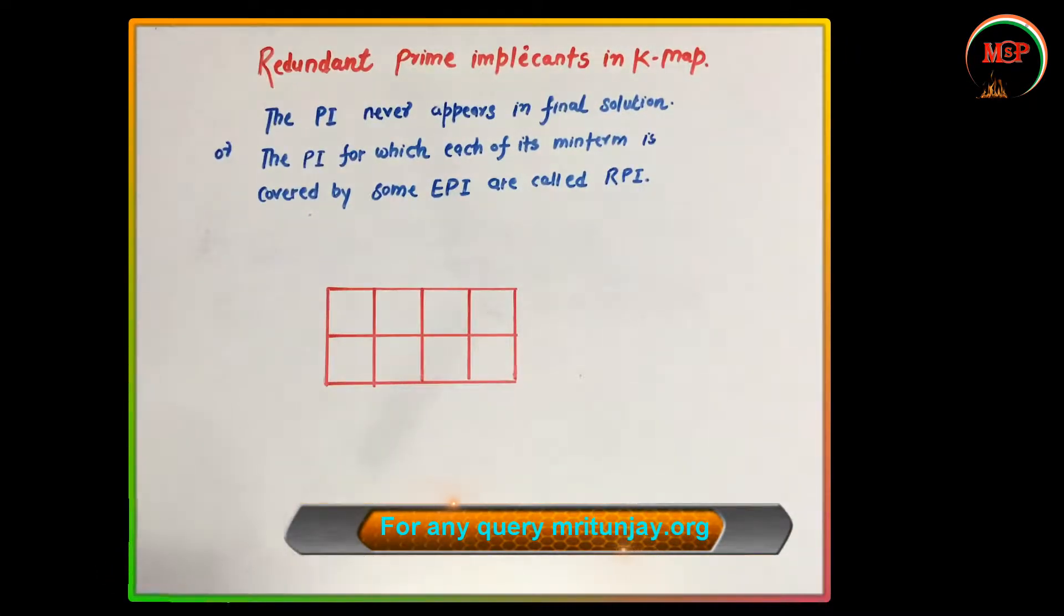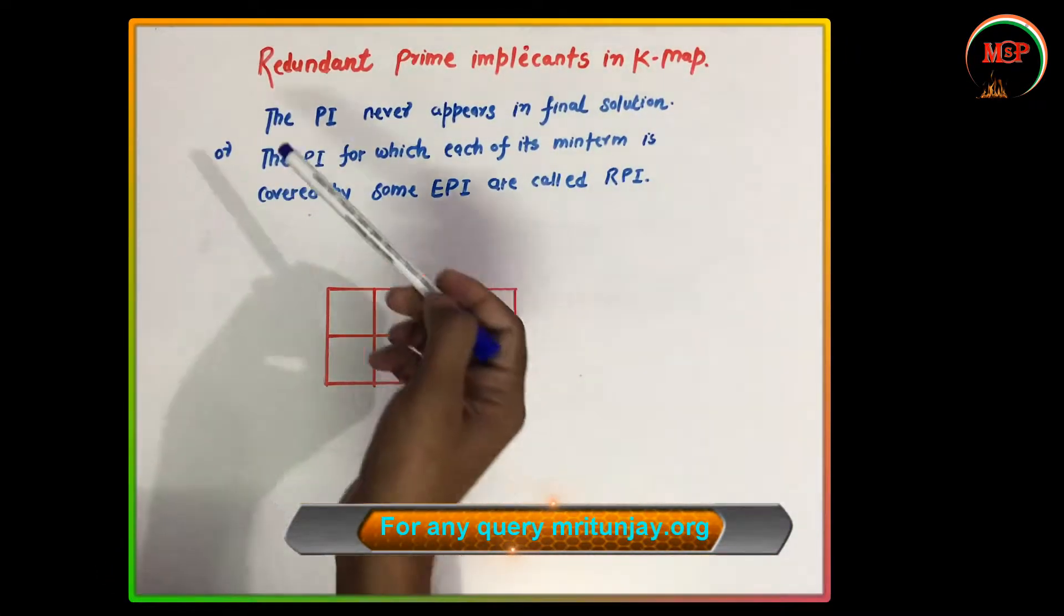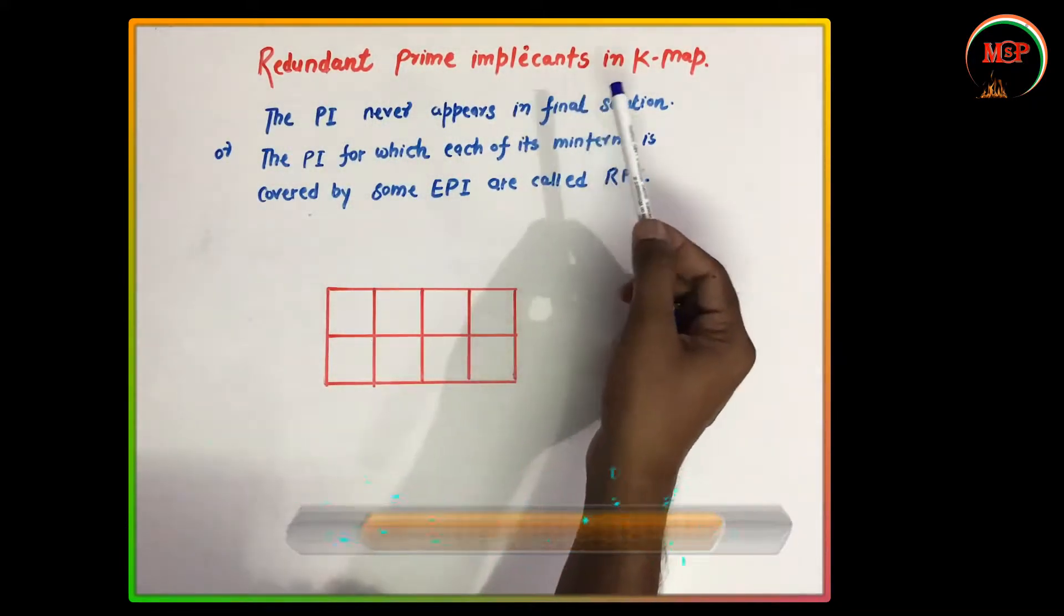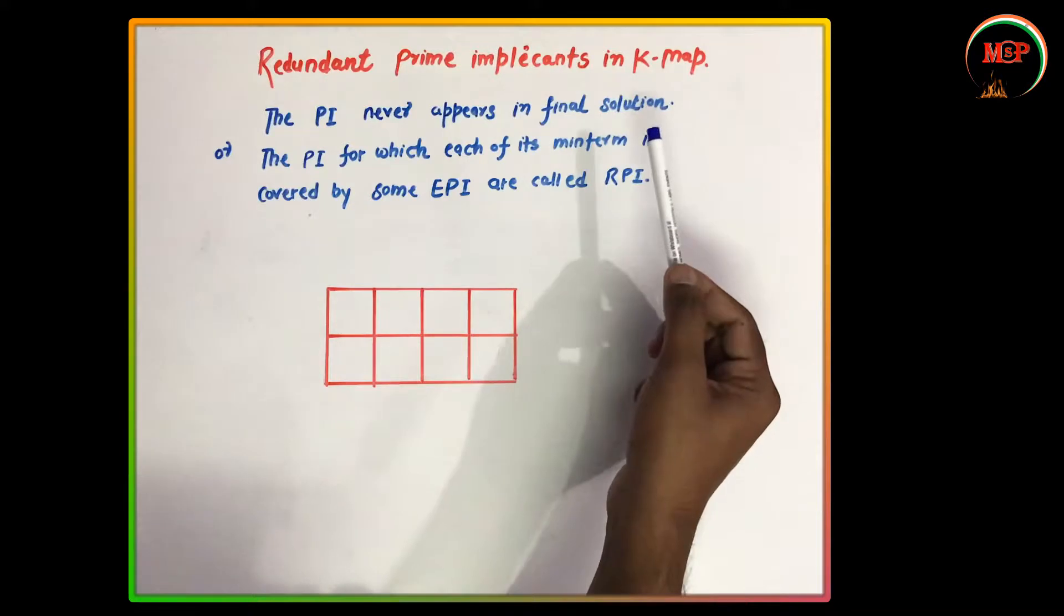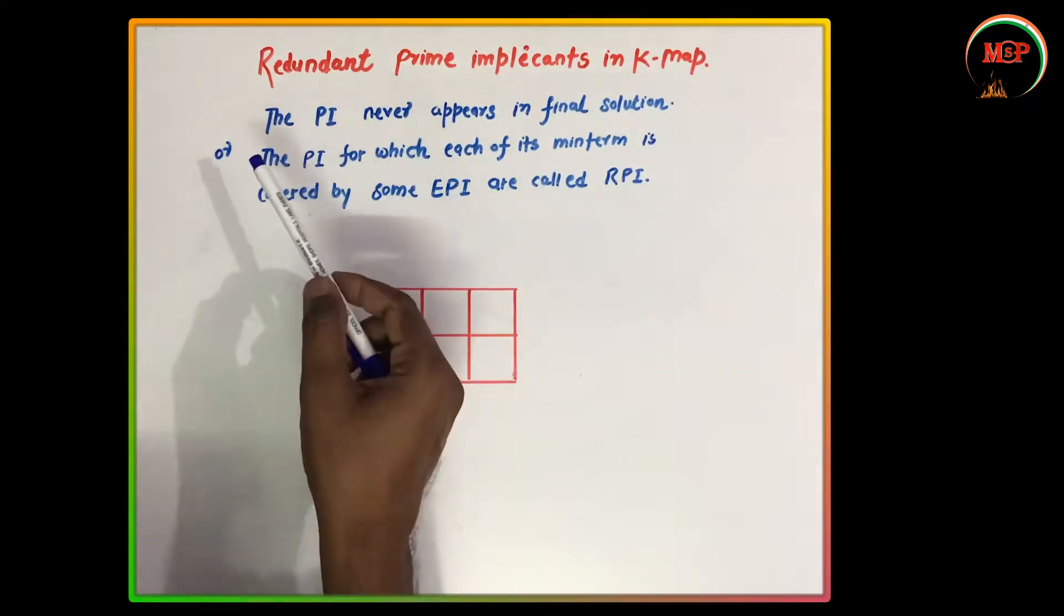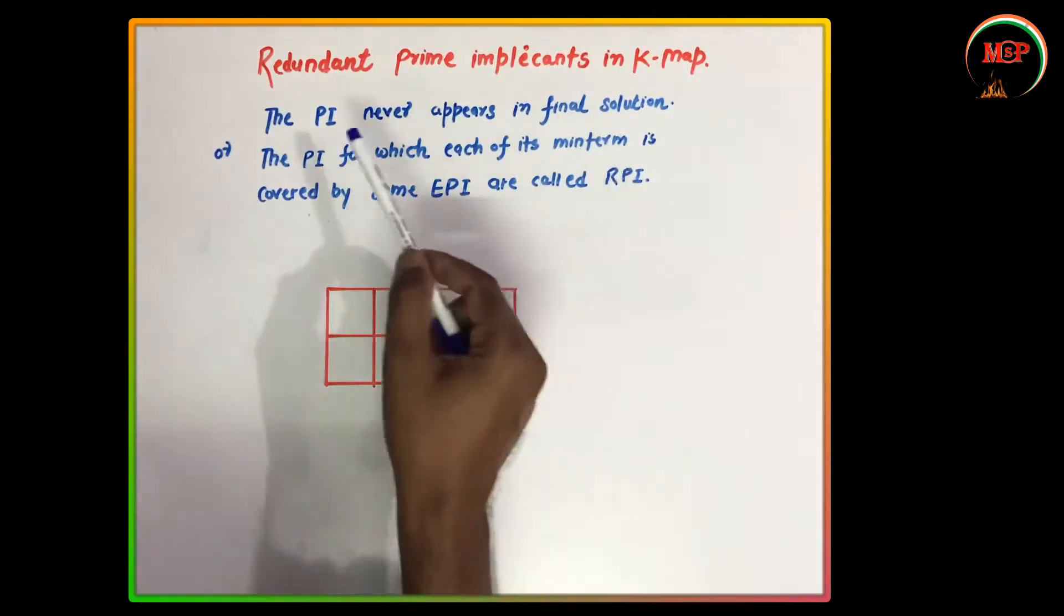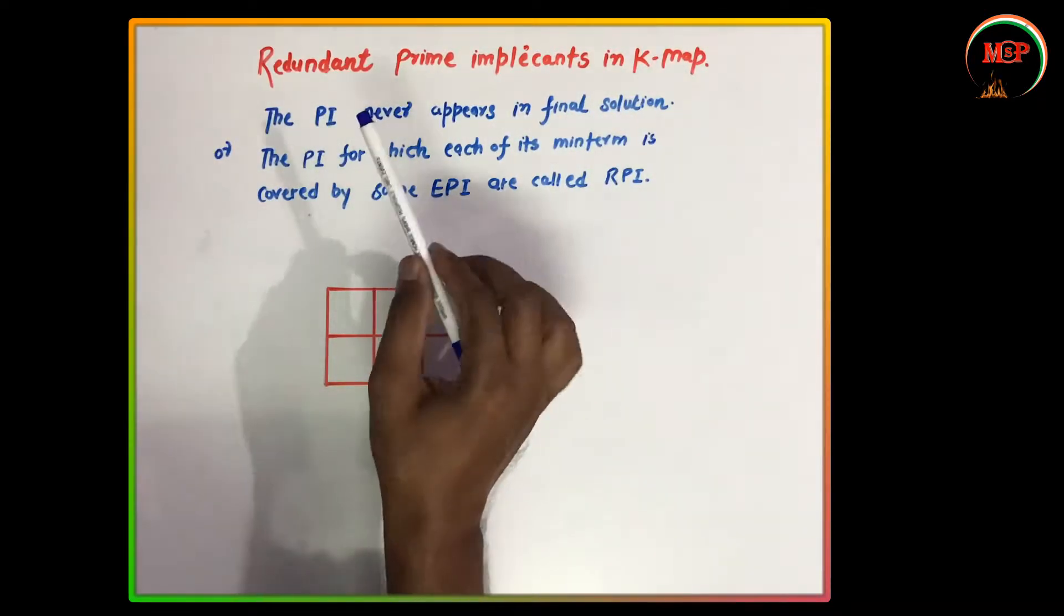In this video we are going to study about redundant prime implicants in Karnaugh map, that is K-map. The PI never appears in the final solution, i.e., prime implicants which will not appear in the final solution.